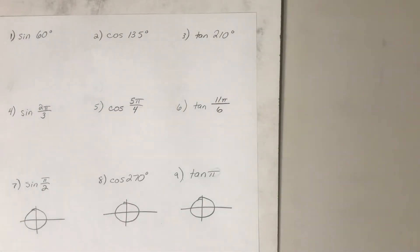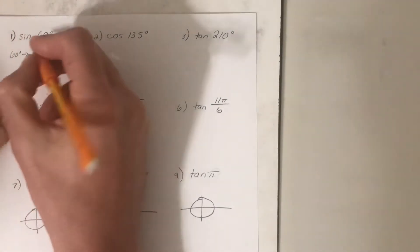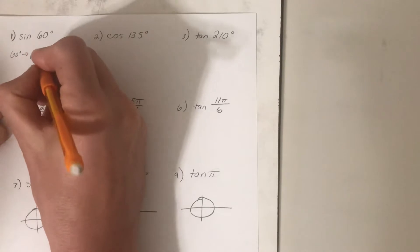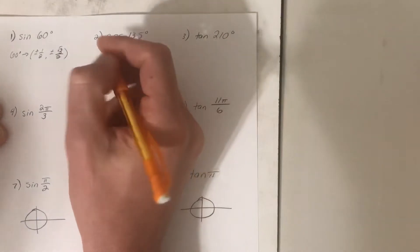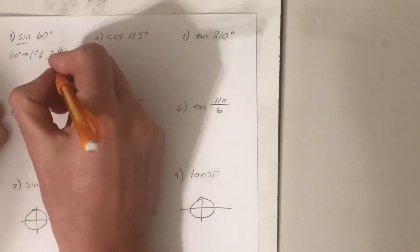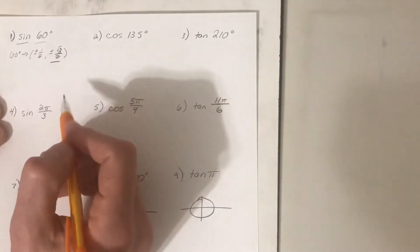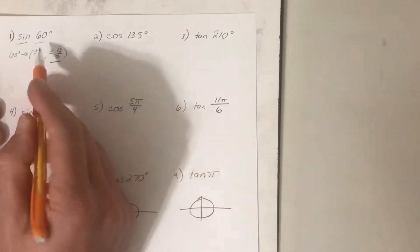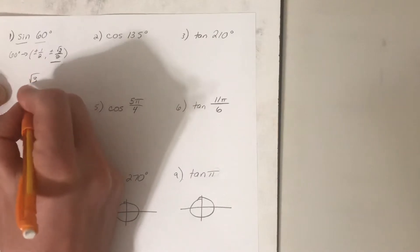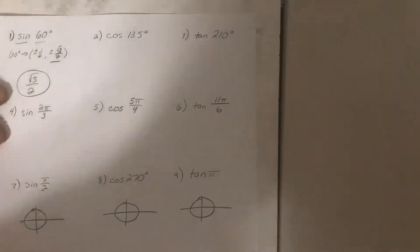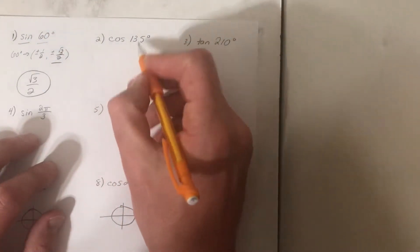For the sine of 60 degrees, the reference angle is 60 degrees and the coordinate associated with that is plus or minus one-half and plus or minus root three over two. Since we are dealing with sine, we will use the y-coordinate. 60 degrees is in quadrant one, so we use the positive y-coordinate. Our answer is root three over two.